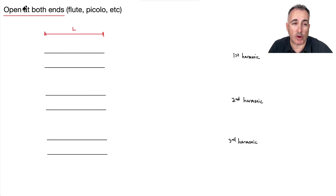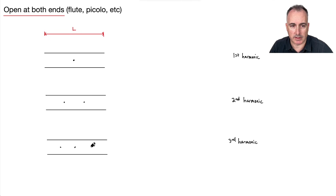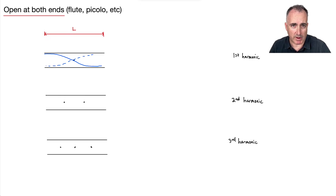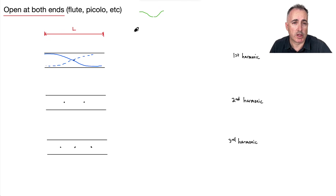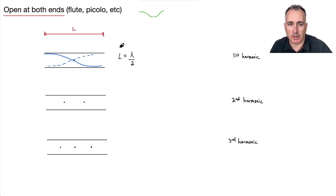Now let's look at a string open at both ends — like a flute or piccolo. Since both ends are open, we can't have a node at the ends. The first harmonic has a node right in the middle, the next has two nodes, the next three. Drawing the first: it's flappy on one end, passes through the middle node, and flappy at the other end. Counting half-wavelengths — it goes from top to middle to bottom — that's one half. So L = λ/2. That's the first harmonic.